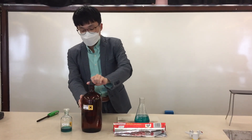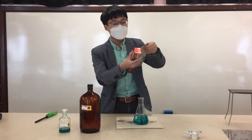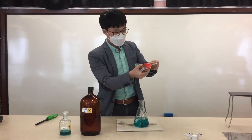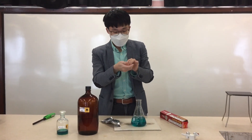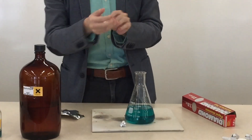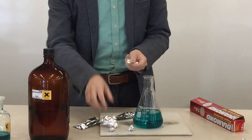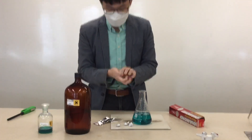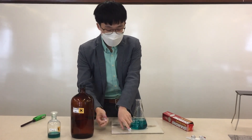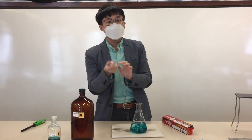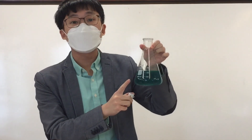After that, we have some aluminum foil here and we are going to make some aluminum balls. We are going to add these aluminum balls into the mixture of copper(II) chloride solution as well as hydrochloric acid inside.